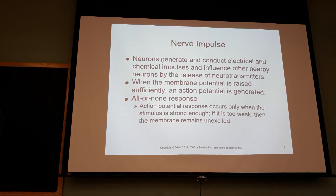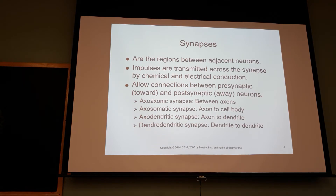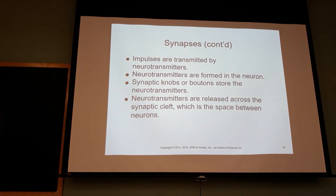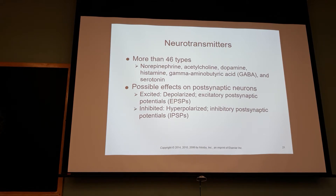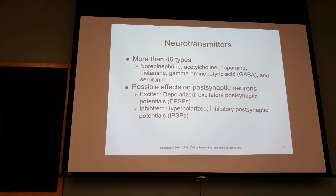These neurotransmitters drive neuronal activity. We get neuronal activity based on the release of these neurotransmitters. Synapses are junctions between adjacent neurons — you get an action potential across cell membranes from one cell body to another, driven by neurotransmitters. Neurotransmitters form in the neuron, are stored in the synaptic bowl, and are released when we have an action potential. Don't think you have to know all 46 types — that's not necessary.